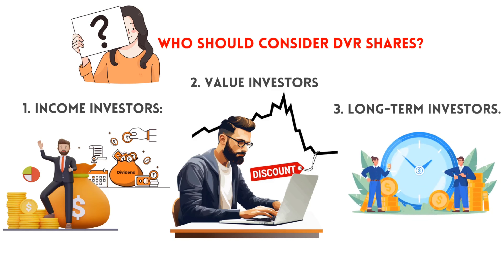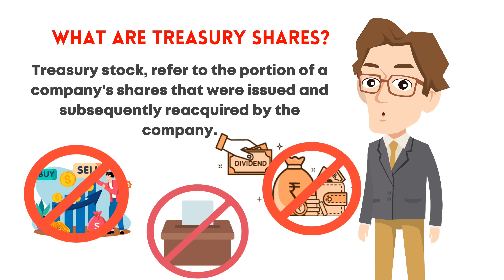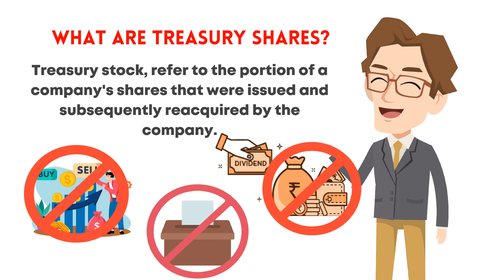The fourth and final type of shares is treasury shares. Treasury shares, also known as treasury stock, refer to the portion of a company's shares that were issued and subsequently reacquired by the company. These shares are not considered outstanding and do not have voting rights or pay dividends. Think of them as shares that the company holds in its own treasury.